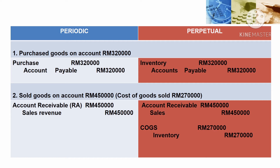The second transaction: sold goods on account RM450,000, with cost of goods sold RM270,000. Under periodic inventory system, debit accounts receivable and credit sales revenue. But under perpetual inventory system, we have to record two sets of double entry. First, debit accounts receivable and credit sales RM450,000. Second, debit cost of goods sold RM270,000 and credit inventory RM270,000, meaning the inventory decreases.